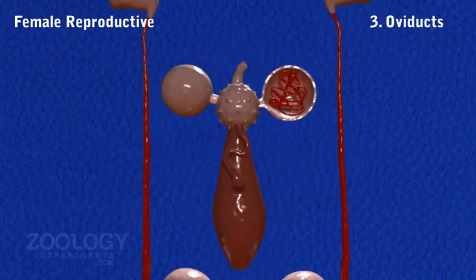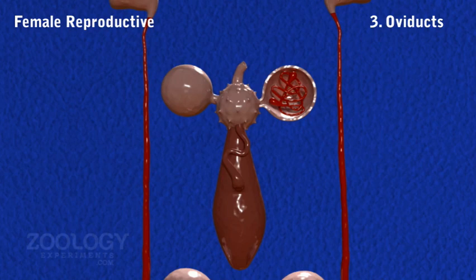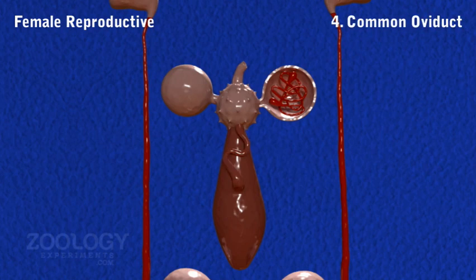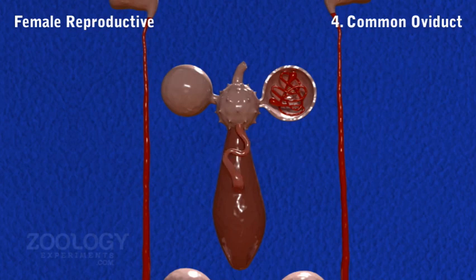Oviducts: The base of each ovisac is continued into a short and slender tube called the oviduct, which runs inward and backwards. Common Oviducts: The right oviduct passes beneath the ventral nerve cord and unites with the left one in the 11th segment to form a single and median common oviduct, which is folded and leads behind into the vagina.